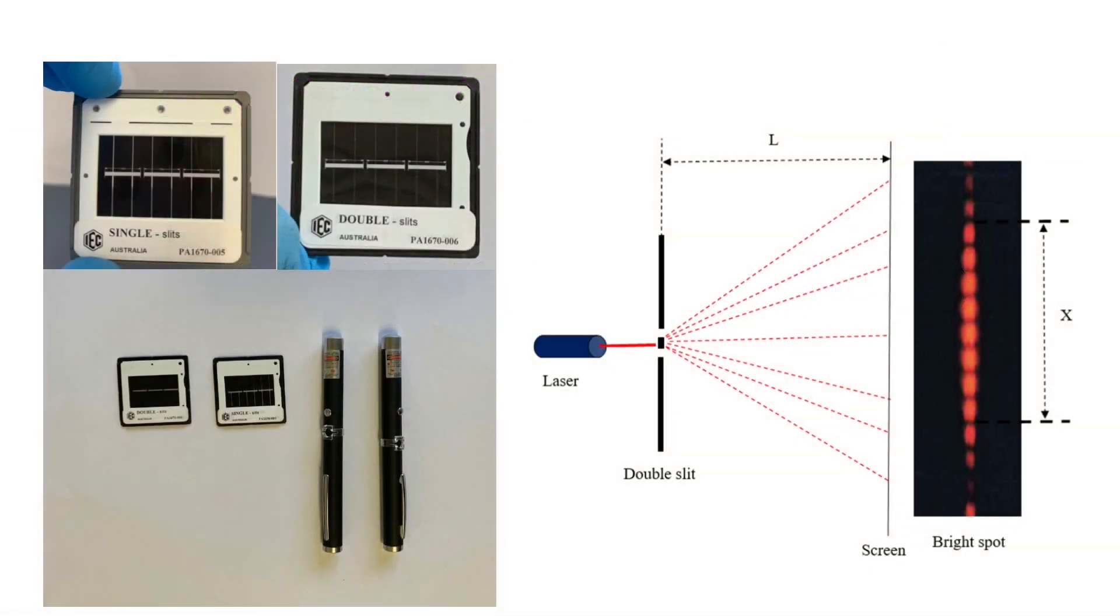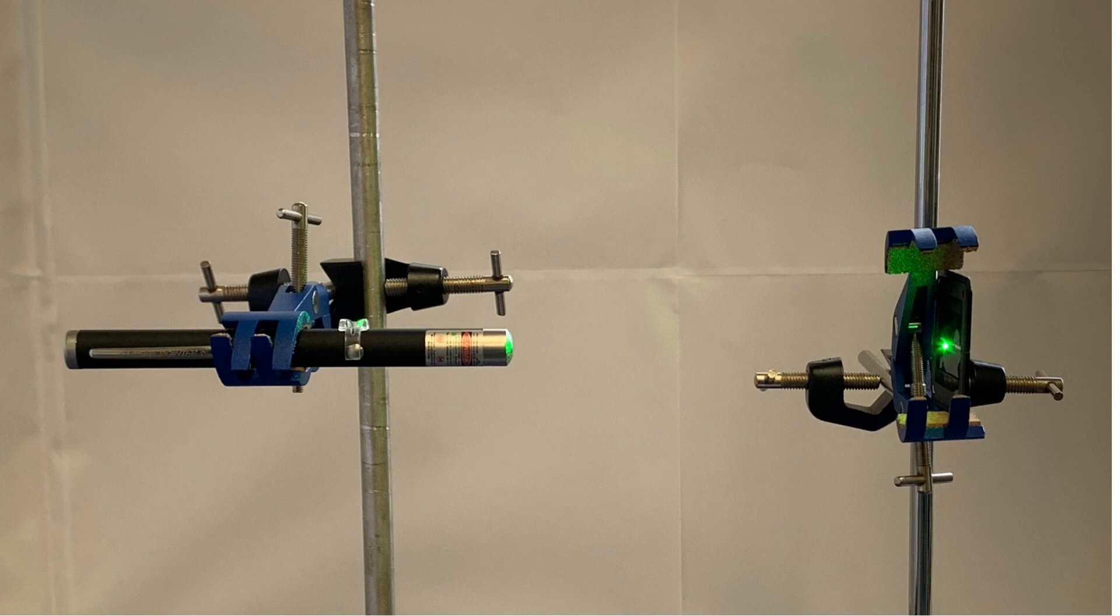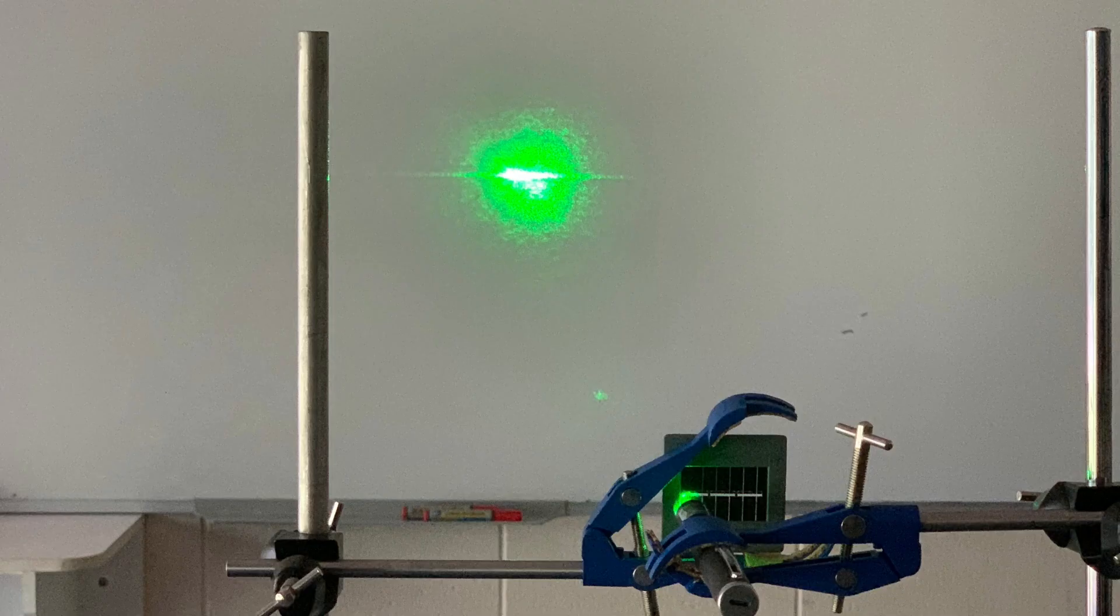Experiment Setup. We'll need to set up the experiment first. We'll need a laser, a double-slit, and a screen to project the results. Now, let's turn on the laser and direct it through the double-slit. We'll place the screen opposite the double-slit.